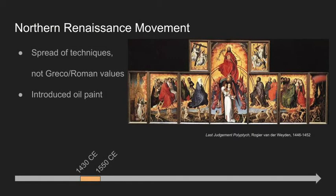The Northern Renaissance movement would be a result of the early Renaissance influences spreading across the Alps and into France, the Low Countries, and Germany. This Renaissance, however, would not idolize the ancient Greeks and Romans, but would rather incorporate their realist techniques into the religious projects of the medieval movement. Artists of this movement would impress their Italian critics with a new type of oil paint, rich and agile compared to the fast-drying Mediterranean fresco.